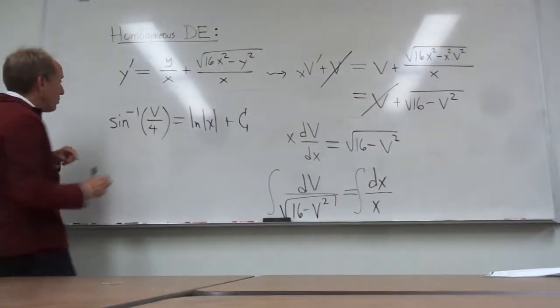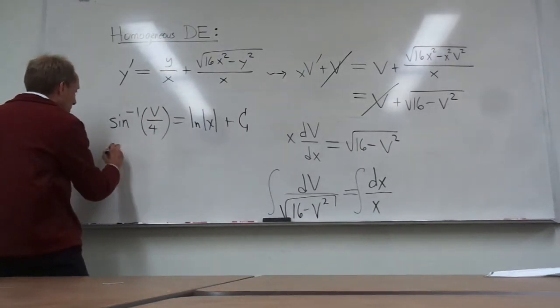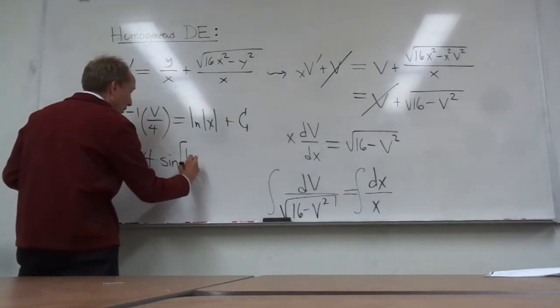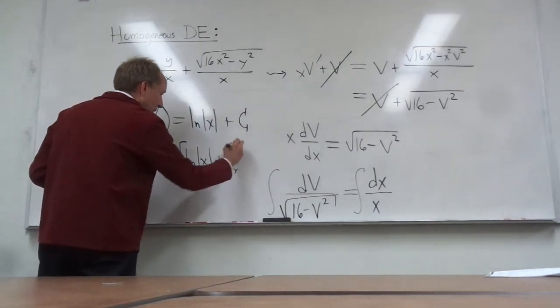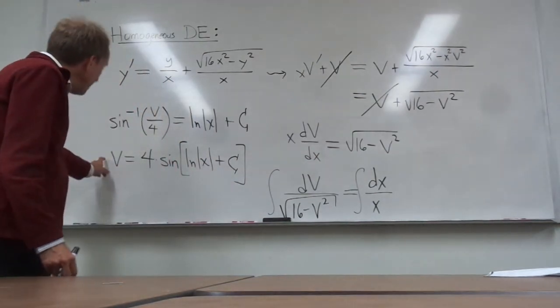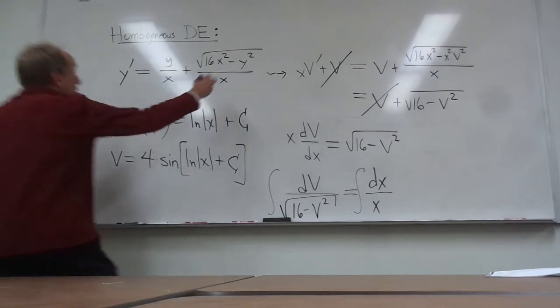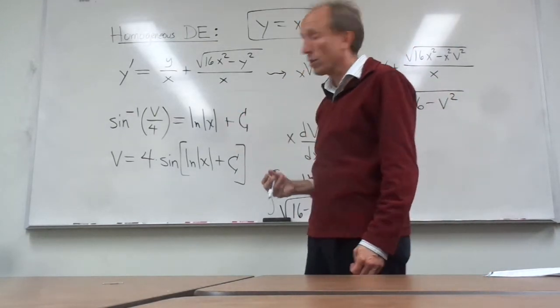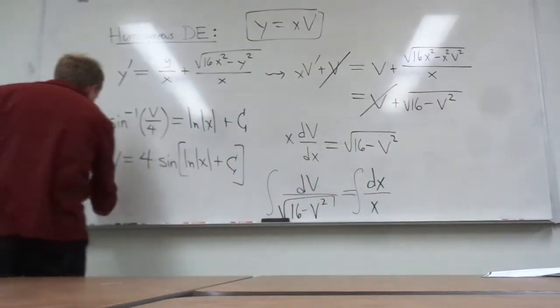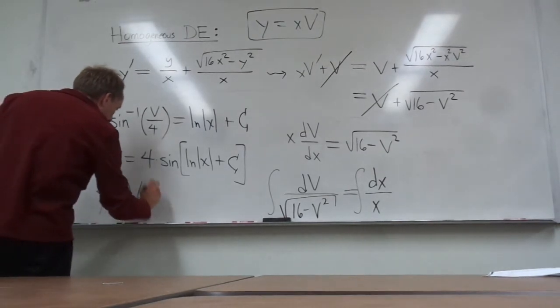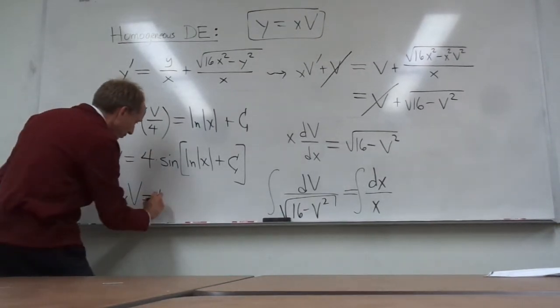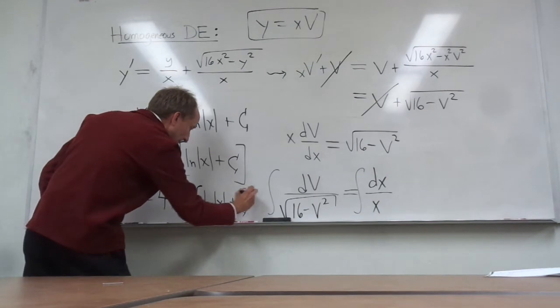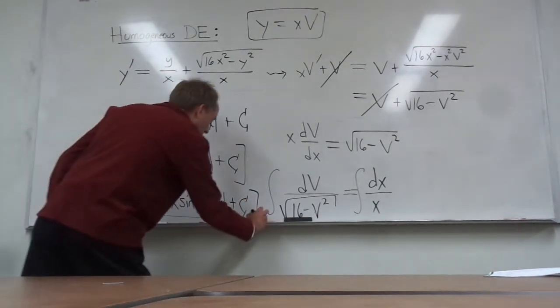And try to solve this for v. To do that, I'm going to take the sine of both sides and then I'm going to multiply by 4. So, it's going to be 4 times the sine of the ln of absolute value of x plus c. That's what v is. Don't forget that's not your final answer. You need to ultimately write your final answer in terms of y. Well, y is just x times v. So, y is just xv. In other words, it's x times what we have right here. So, 4x times the sine of the ln of absolute x plus c. There you go. So, this would be the final answer.